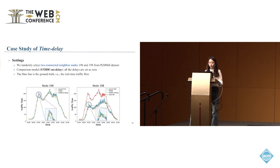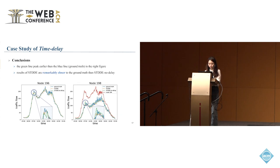Then we give a case study of the time delay. We first introduce our settings. We randomly select two connected neighbor nodes from our traffic dataset and use a comparison model called STDDE no delay, where we set all delays to zero. The blue line is the ground truth, meaning the real-time traffic flow. We found two conclusions.